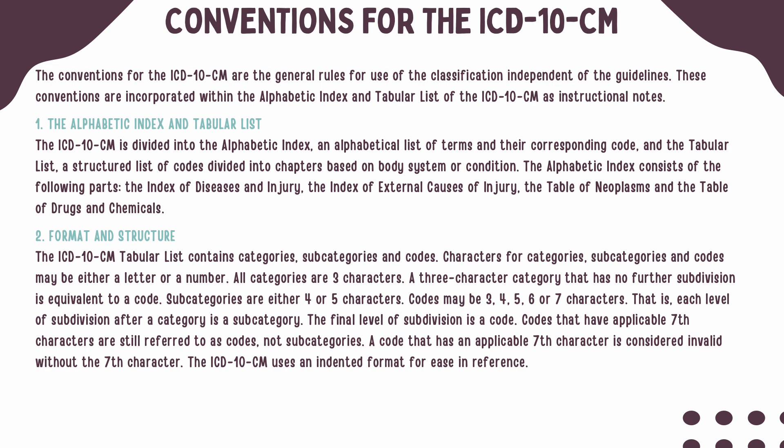A category is made up of three characters, such as E-10 or I-11. When you have a three-character category that cannot be further subdivided, it is equivalent to a code. Subdivisions of your categories can be either four or five characters, which are also referred to as subcategories.